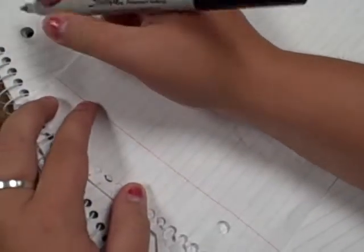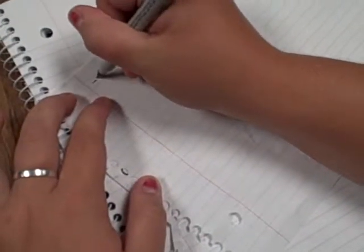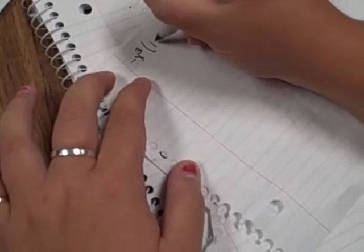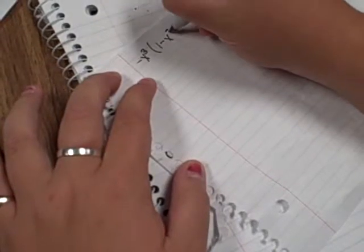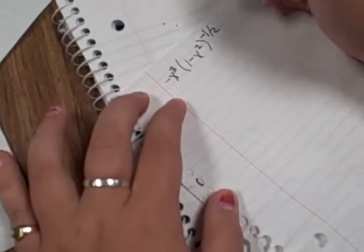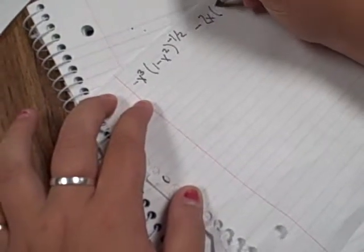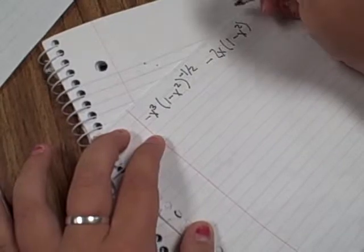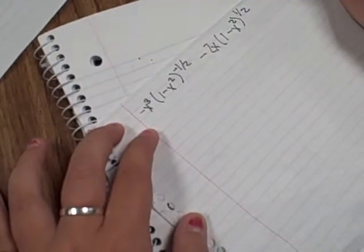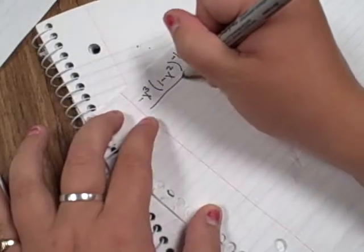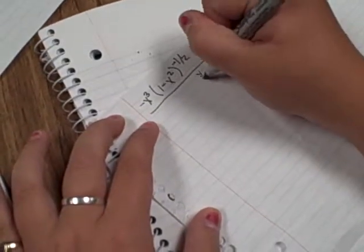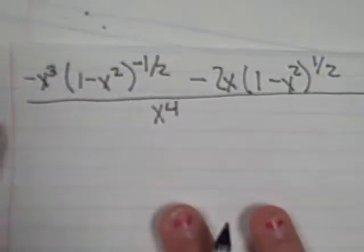Alright, so today we're doing problem number 78. The first thing you have to do is start out with the problem, which is negative x cubed times 1 minus x squared to the negative one half, minus 2x times 1 minus x squared to the positive one half. And all of this is over x to the fourth, and that's the problem.